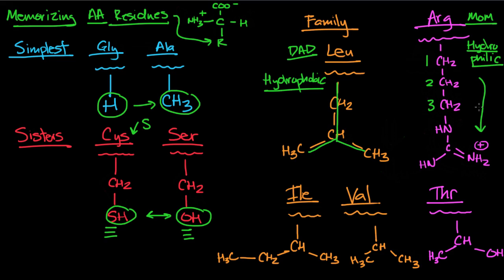So Lou and Arg, they get together, they get married, and then they have three kids. The first kid takes after daddy. Illy, isoleucine. We still have the same structure. He looks very similar, and he's also hydrophobic, just like his dad.